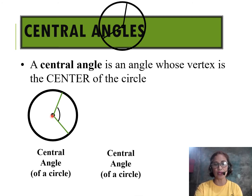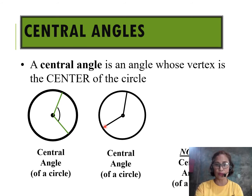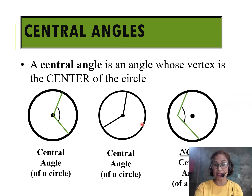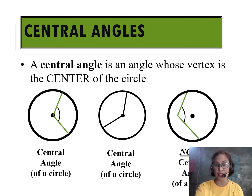The second example is also an angle whose vertex is formed at the center, and it has a radius and another radius, which makes it a central angle. The third one is obviously not a central angle. First, its vertex is not on the center, and these two rays are not radii of the circle, so it's not a central angle.